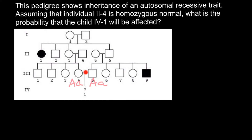If any of these parents were homozygous dominant, there is no way their child would be affected. So let's find the probability of each parent being heterozygous. Starting from the top: this couple is phenotypically normal but they have an affected child. Because this is an autosomal recessive trait, we instantly know that the genotype of the parents in the first generation is heterozygous.